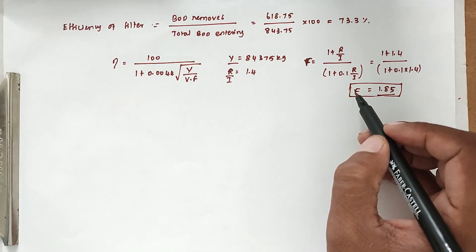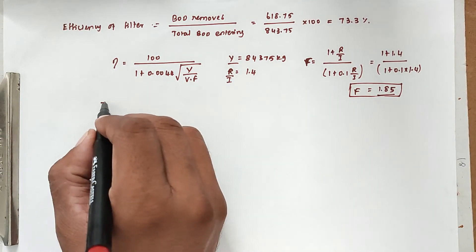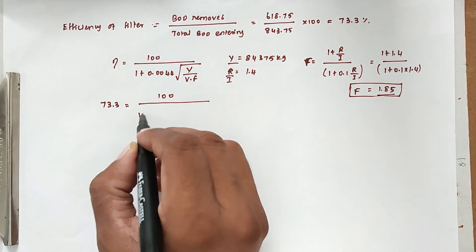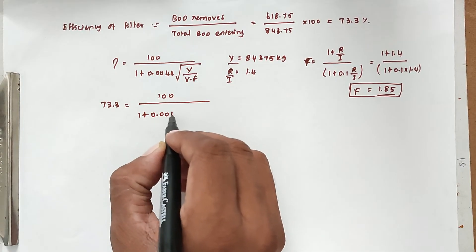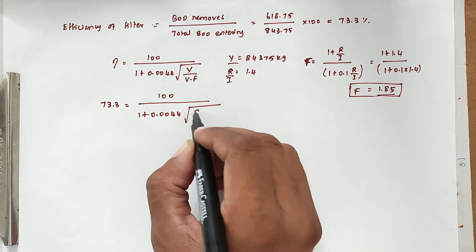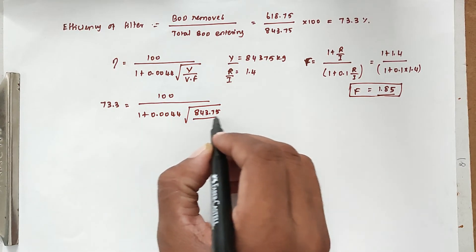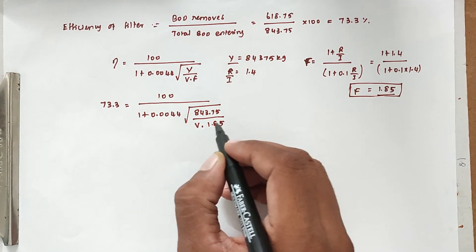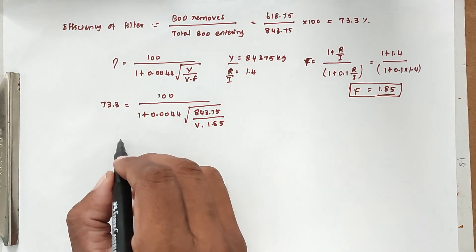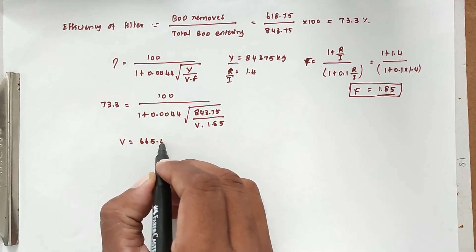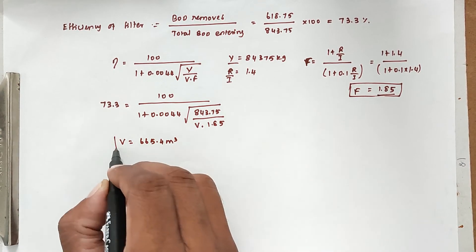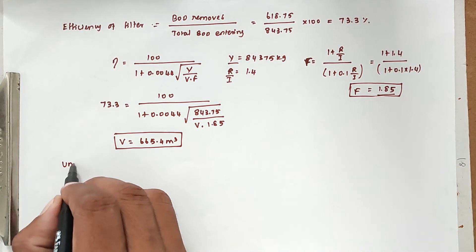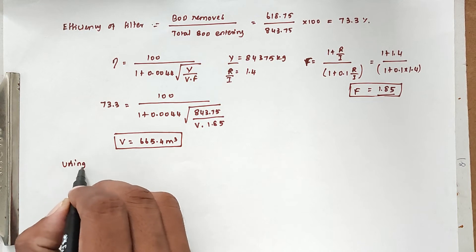Now substituting into the NRC formula: 73.3 = 100 / (1 + 0.0044 × √(843.75 / V) / 1.85). Solving for V gives a volume of 665.4 cubic meters for the high rate trickling filter.